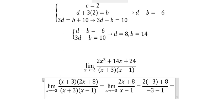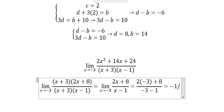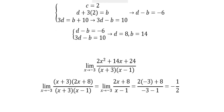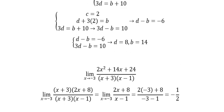Now we substitute x equals negative 3. This gives (2 times negative 3 plus 8) over (negative 3 minus 1), which equals 2 over negative 4, or negative 1/2. This is the final answer. Thank you for watching.